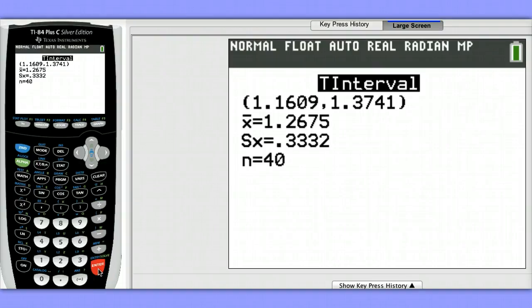So we are 95% confident that the interval from 1.16 to 1.37 grams per mile contains a true mean level of nitrogen oxides emitted by this type of light duty engine.